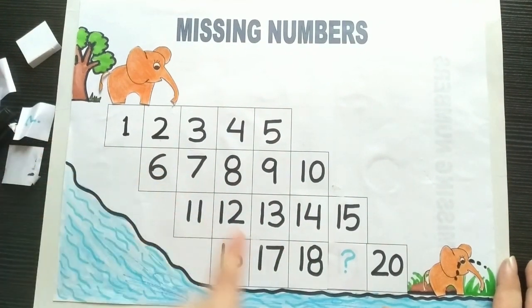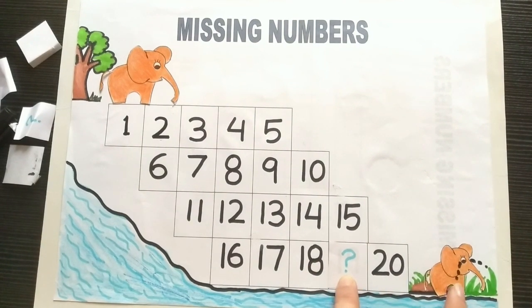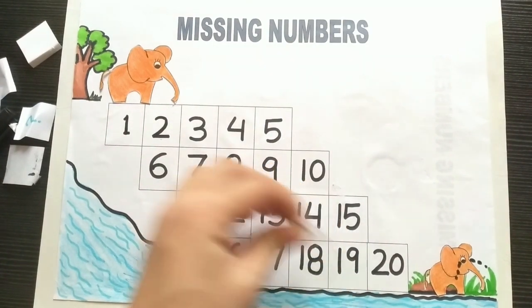Seventeen, very good. Now after seventeen is number eighteen. Another missing number here. Mama elephant is about to reach the baby elephant. Tell me, what is the missing number here? What comes between eighteen and twenty? Number nineteen.